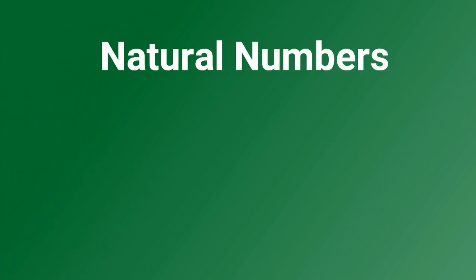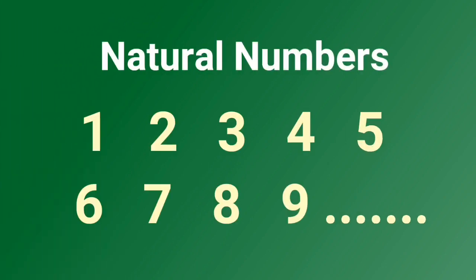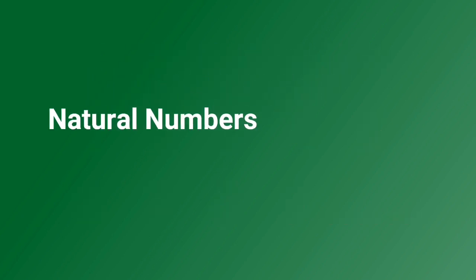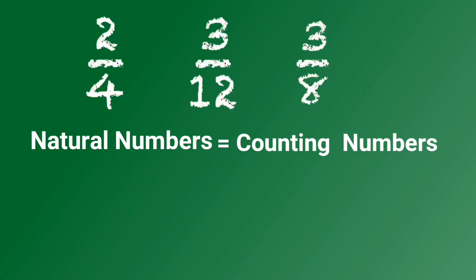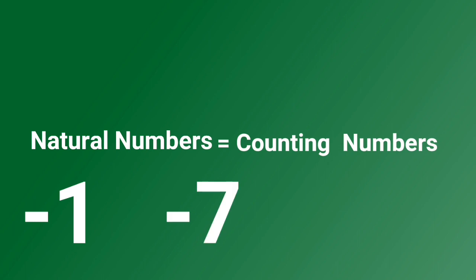These are natural numbers, also known as counting numbers: 1, 2, 3, 4, 5, and so on. Natural numbers are counting numbers — not fractions, not negative numbers.